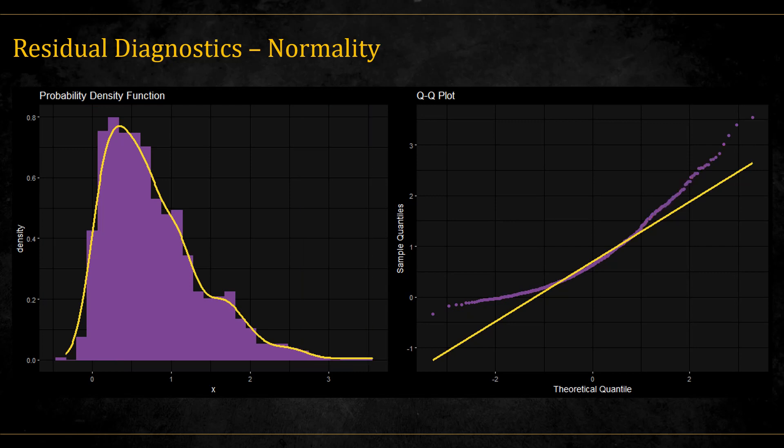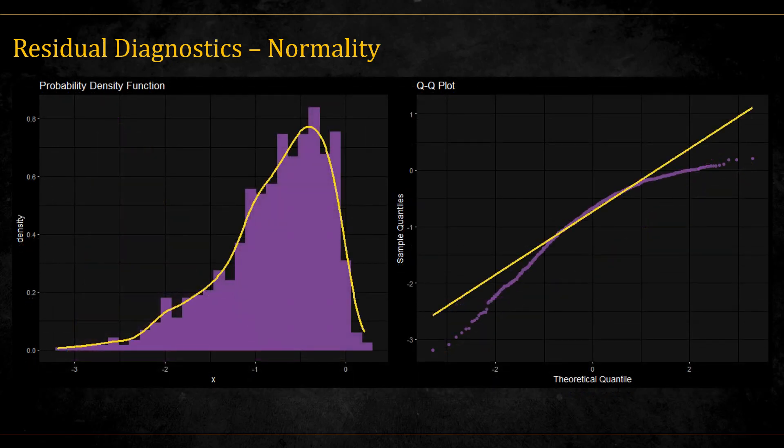This fits with a distribution that has a right tail. Here is the opposite example of a left-tailed distribution. We see that the QQ graph is exactly mirrored from before.